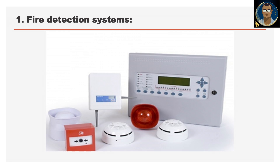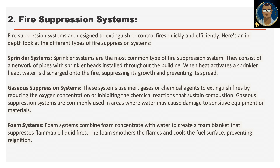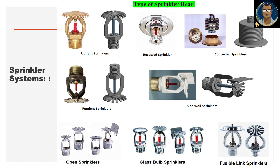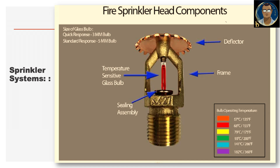Fire suppression systems are designed to extinguish or control fires quickly and efficiently. The first type is the sprinkler system — the most common type of fire suppression system. They consist of a network of pipes with sprinkler heads installed throughout the building. When heat activates a sprinkler head, water is discharged onto the fire, suppressing its growth, sometimes extinguishing the fire, and preventing it from spreading.